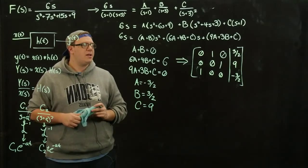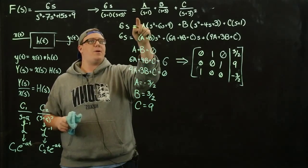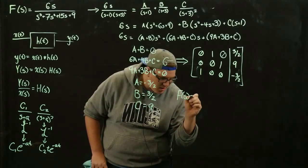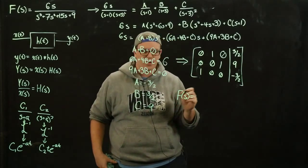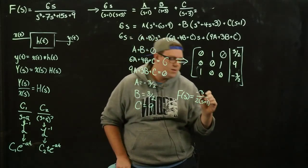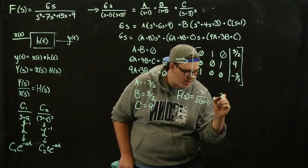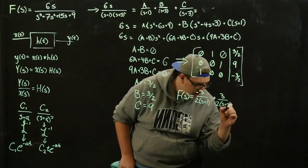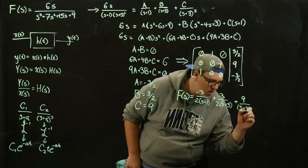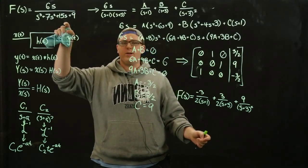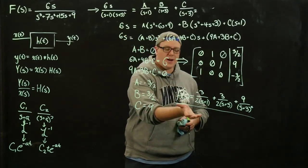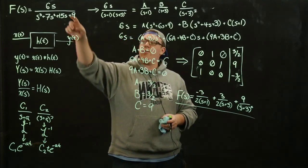So we can take these values and substitute them back. The original F of s is now equal to minus 3 over 2 times s plus 1, plus 3 over 2 times s plus 3, plus 9 over s plus 3 squared. The original function and this partial fraction expansion are equivalent, so taking the inverse Laplace transform of either gives the same result.